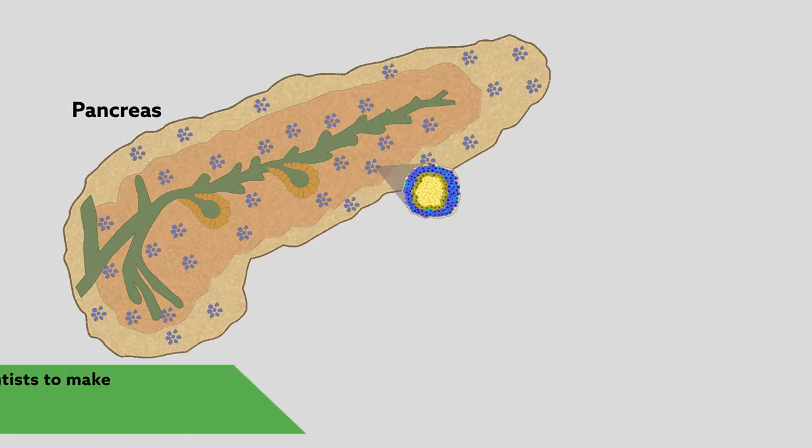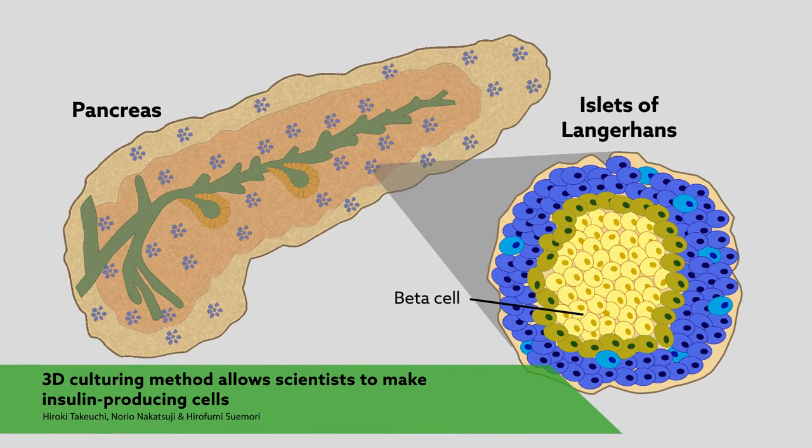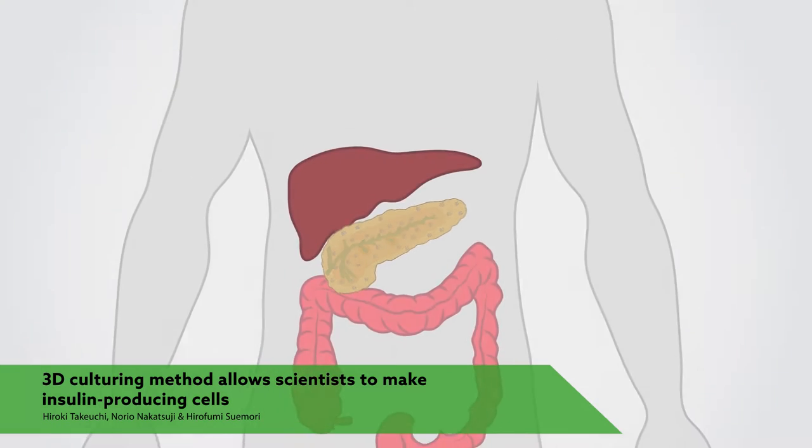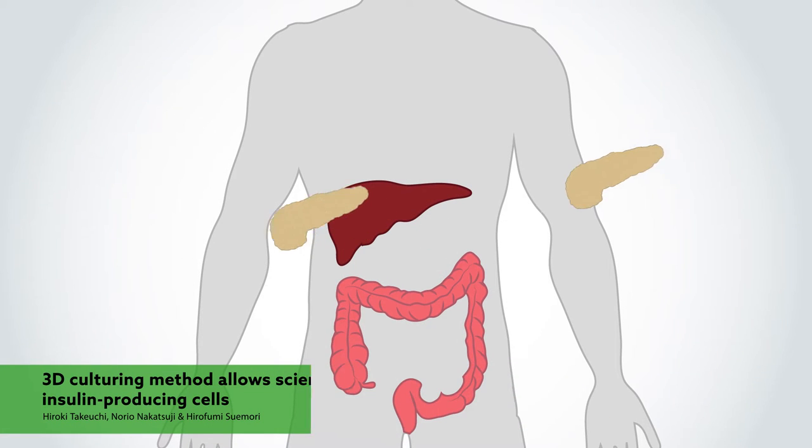Millions of patients with type 1 diabetes are short on beta cells. Pancreas transplants can help restore these insulin-producing cells, but there aren't enough donors to go around.